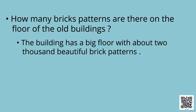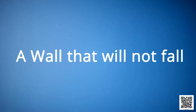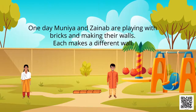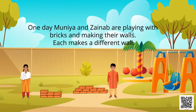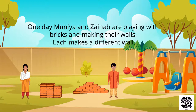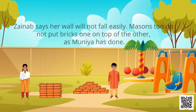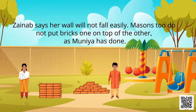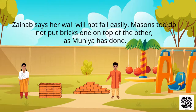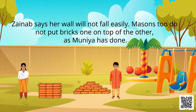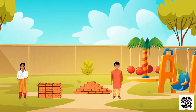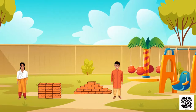Now it's time to move ahead and to know about a wall that will not fall. One day Muniya and Zainab were playing with bricks and making their walls. Each makes a different wall. Zainab says her wall will not fall easily. Masons too do not put bricks one on top of the other as Muniya has done. Which wall will be stronger? It will be that of Zainab's.